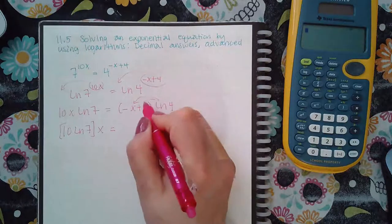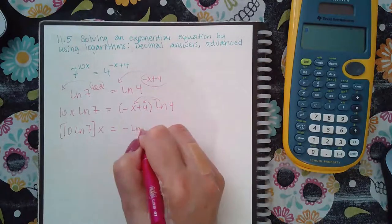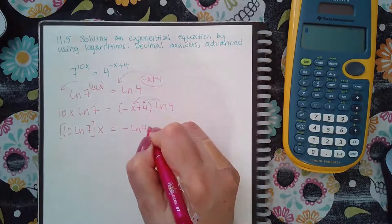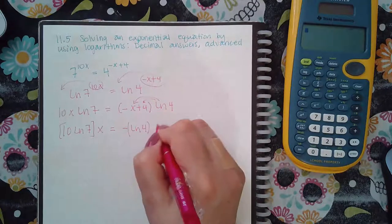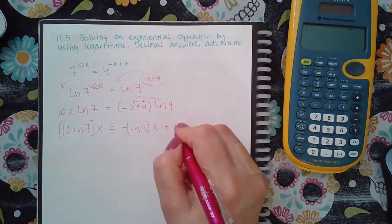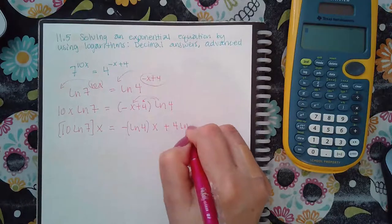Here, I would distribute this number. So I would have negative ln(4) times x plus 4 ln(4).